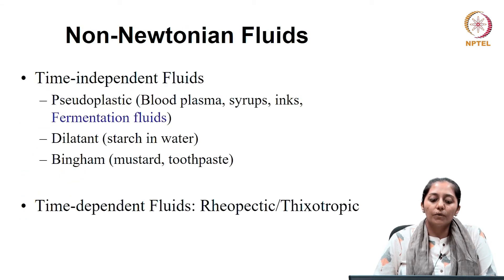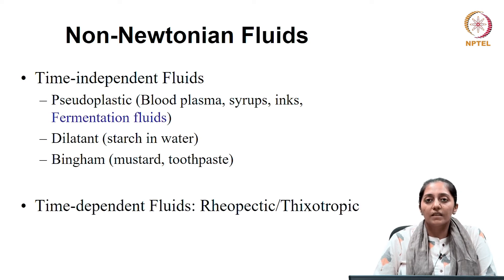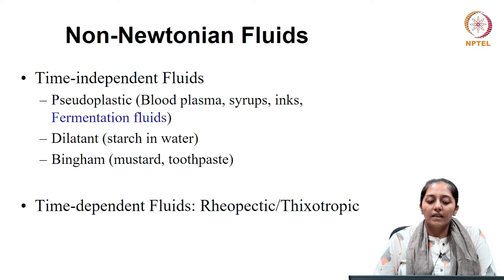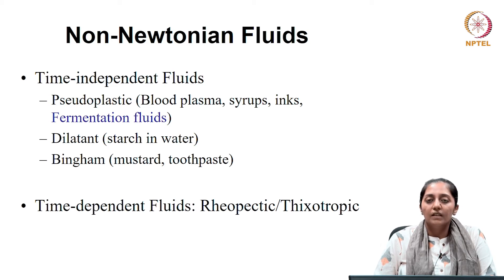What are non-Newtonian fluids? Non-Newtonian fluids can be differentiated into different forms like pseudo plastic — examples are blood plasma, syrups, ink, and fermentation fluids. Dilatant behavior is like starch in water, and Bingham plastic is like mustard or toothpaste. These all come under time-independent fluids, but there are certain non-Newtonian fluids whose viscosity is time dependent, and these can be further classed into being rheopectic or thixotropic.